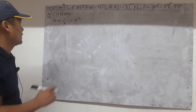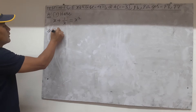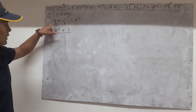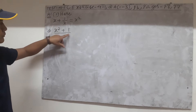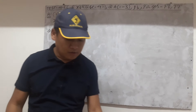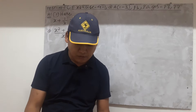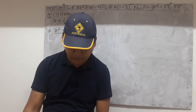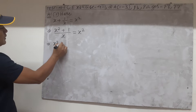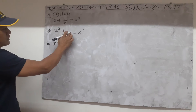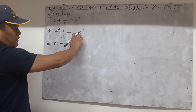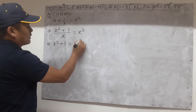Let us simplify it. So x into x is x squared, plus 1, divided by the LCD which is x, is equal to x squared. That implies x squared plus 1 is equal to — now we can shift the x to the right side to the numerator and multiply, so x into x squared is x cubed.